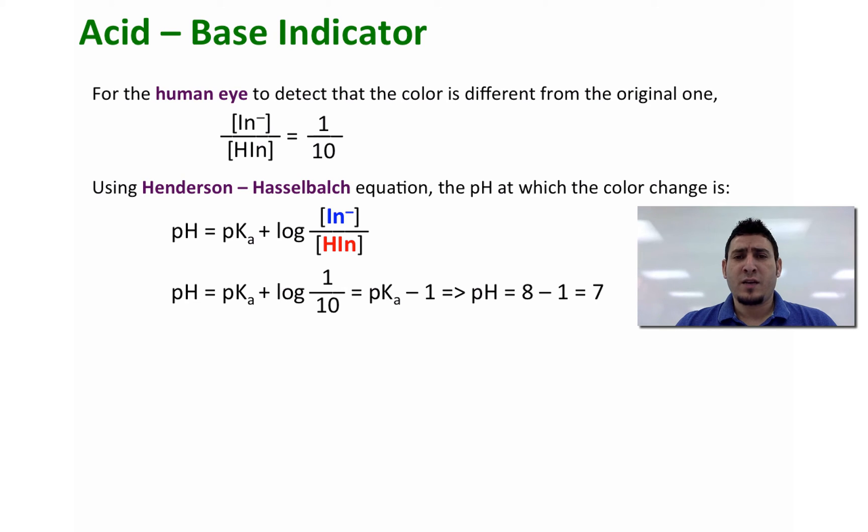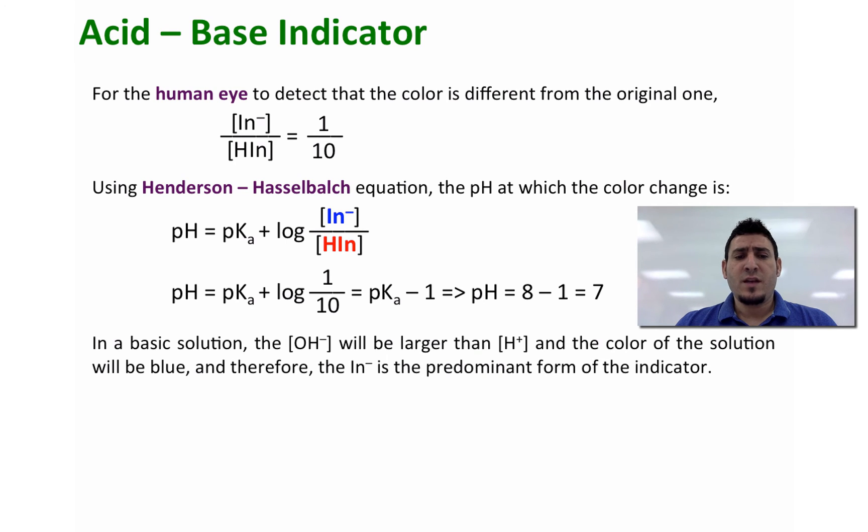So we plug these values and we get that the pH is equal to 8 minus 1, that's equal to 7. So now in a basic solution, the OH⁻ will be larger than H⁺, which is normal, and the color of the solution will be blue.